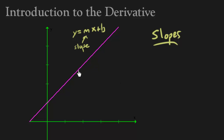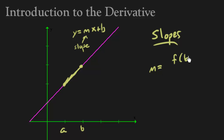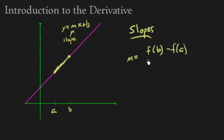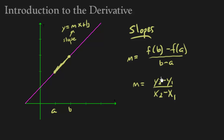Let's say I want to know the slope from point a to point b. I want to know the slope of this line. We have m, which is the slope of a line, and that's going to be f(b) minus f(a) over b minus a. You might have also learned it as y2 minus y1 over x2 minus x1 — these two are the same formula.